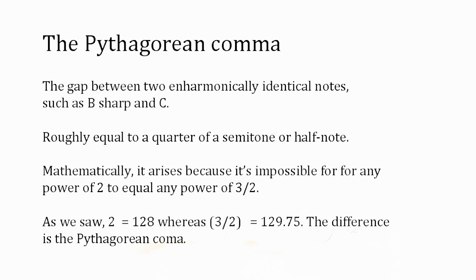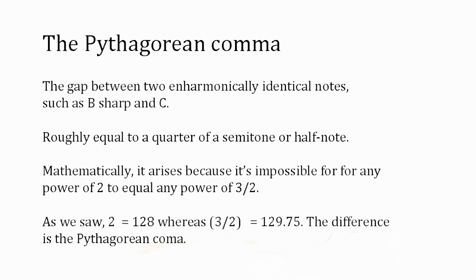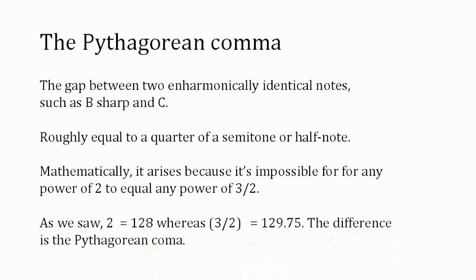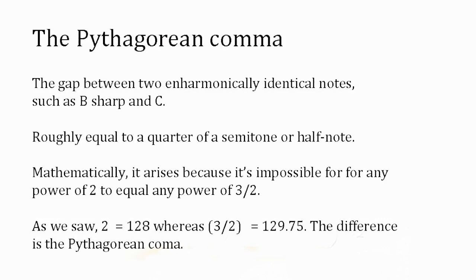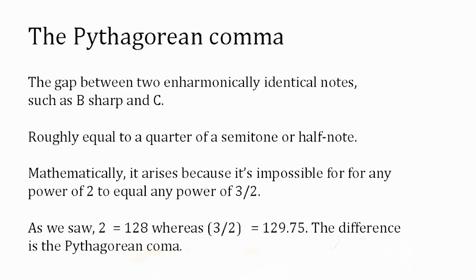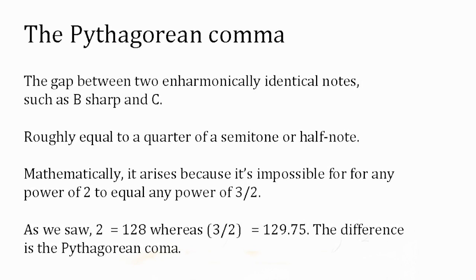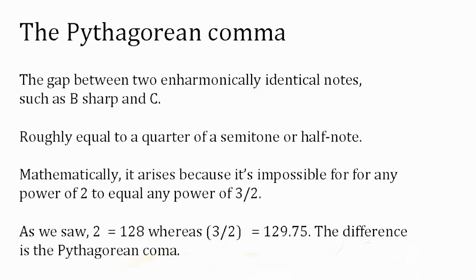This small gap or discrepancy between two enharmonically identical notes, such as B-sharp and C, is what's known as the Pythagorean comma. It's roughly equivalent to a quarter of a semitone or half note, and although that may not seem much, it's very noticeable in practice, and is one of the reasons that, beginning in medieval times, musicians began to experiment with other systems of tuning in an effort to avoid the dissonances that Pythagorean tuning causes, especially when music started to involve a wider range of sounds, harmonies, and instruments.